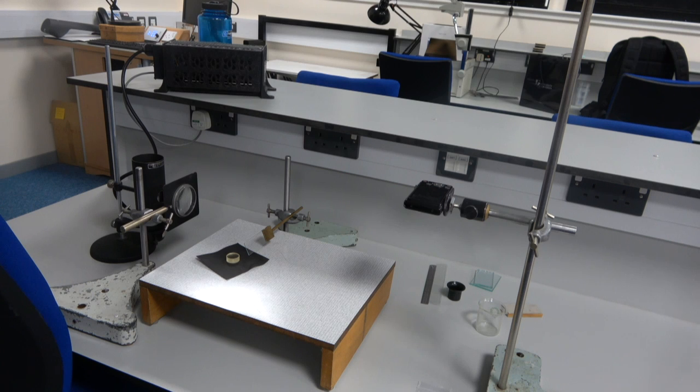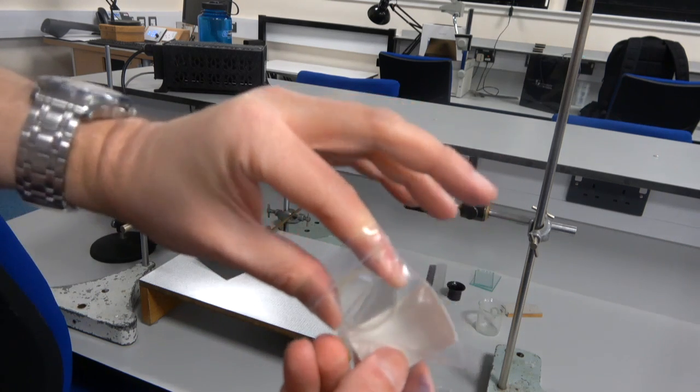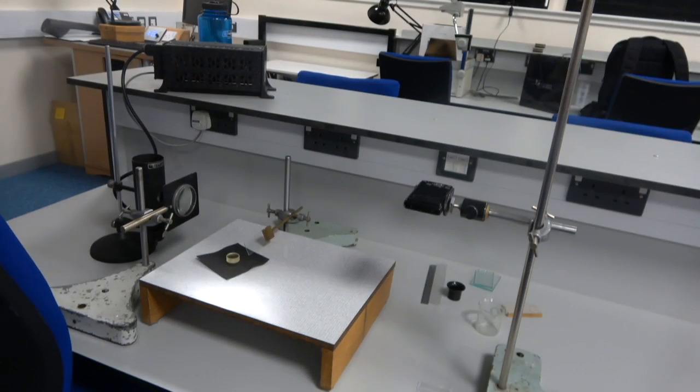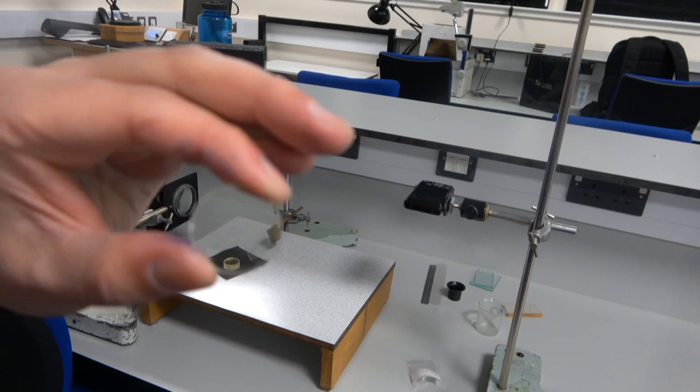And then, we need to take the lens. So, again, I'm just grabbing the lens. You'll see I'm just taking it by the edges, where it's not going to affect the image forming surface at all.